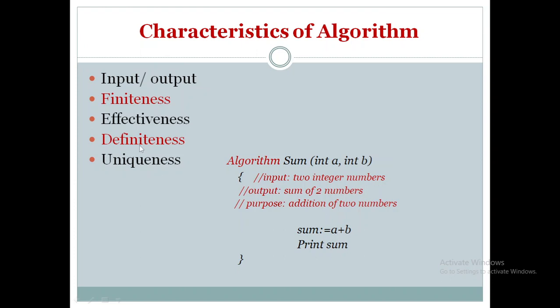The fourth characteristic is definiteness. Definite means if I write a statement, it will definitely do its work, and effectively do its work. For example, if I remove 'sum = A + B', the algorithm becomes incomplete — that line contributes its work to the algorithm, as does 'print sum'. The last characteristic is that whatever statements are written as part of the algorithm, they are unique: step 1 is 'sum = A + B', step 2 is 'print sum' — both are different.